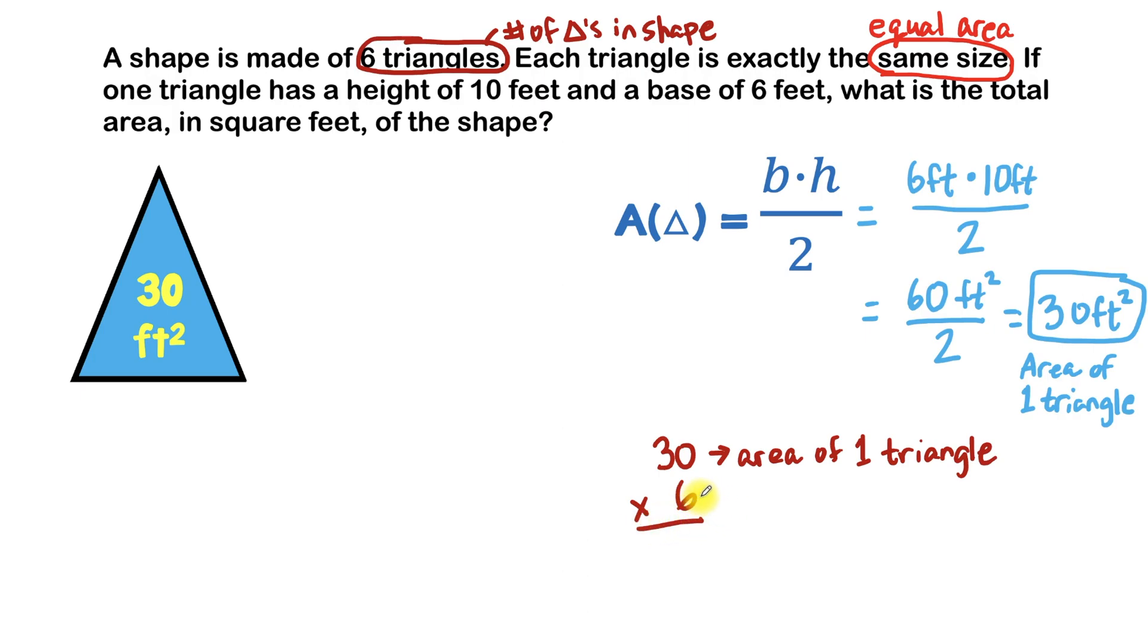Six, where six is the number of triangles in this shape. Six times zero is zero, and six times three is 18, which means that the total area of this shape is 180 feet squared.